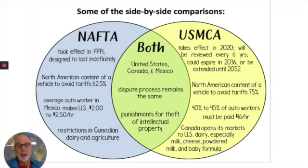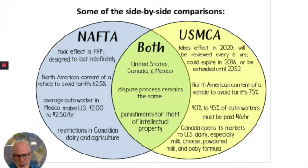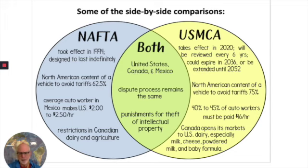As far as pay goes, in Mexico the average auto worker made only two to $2.50 an hour — that's been raised significantly, up to $16 an hour. And in Canada, there were quite a few restrictions on dairy and agriculture, and many of those have been lifted. There are still some issues that are being settled or still up in the air.